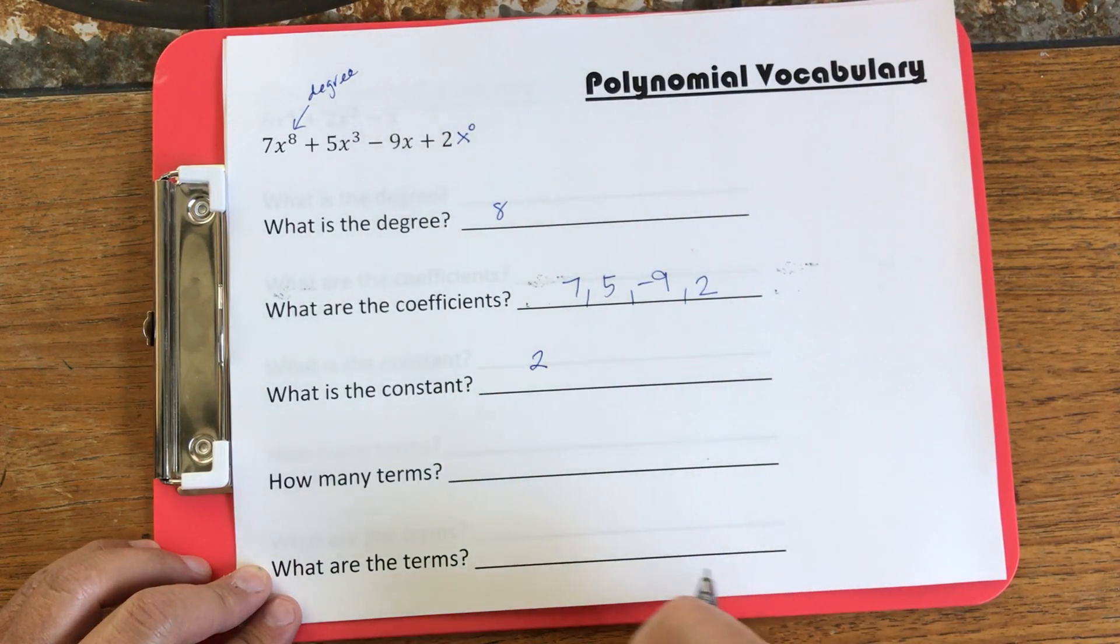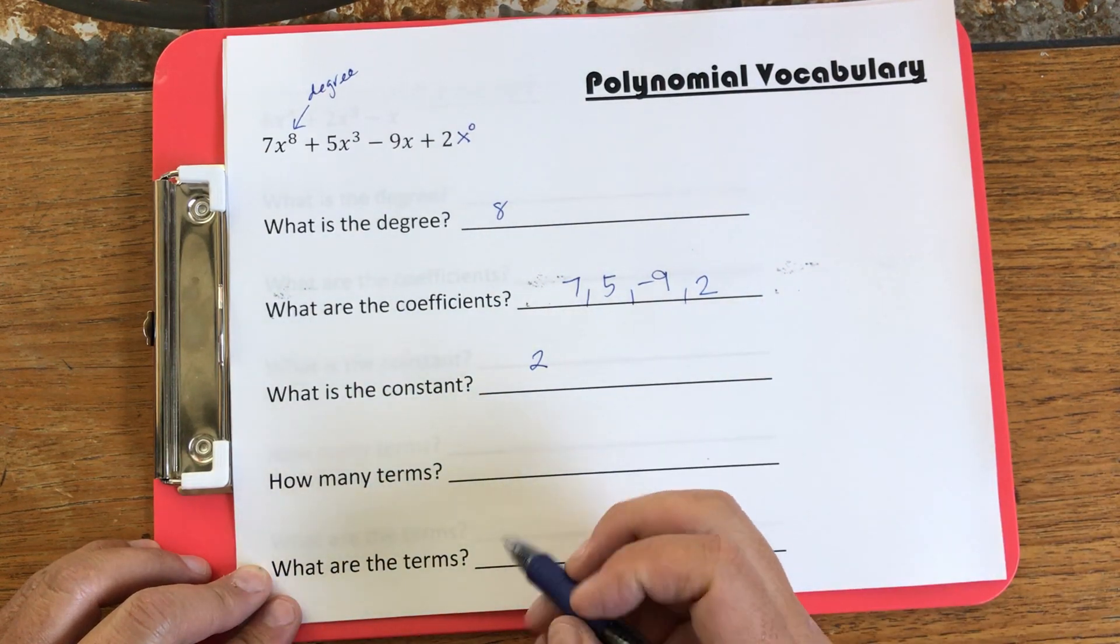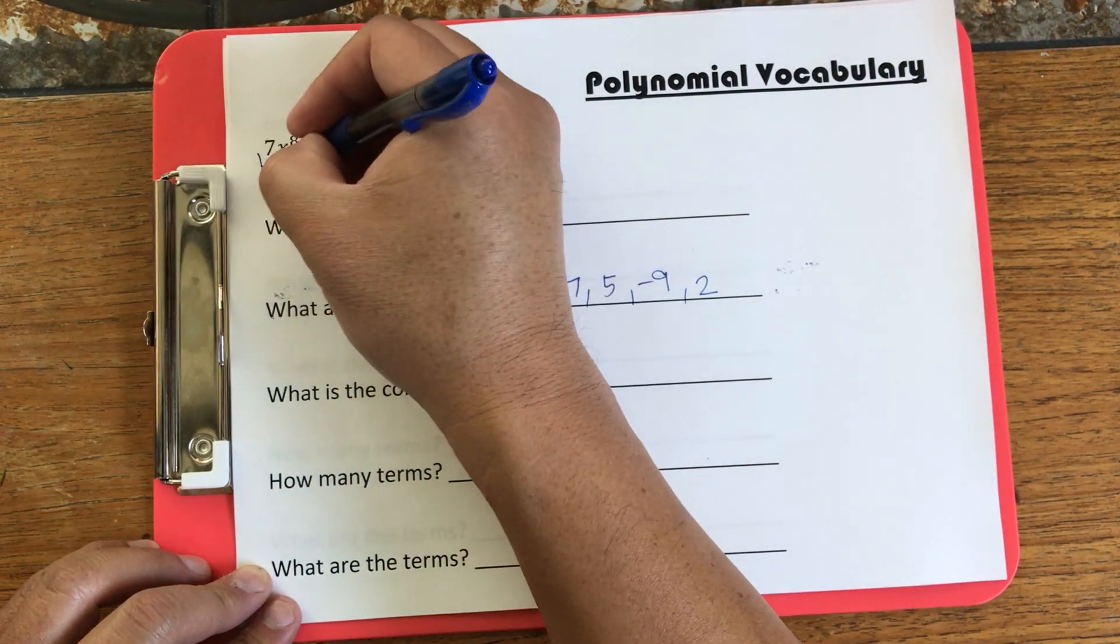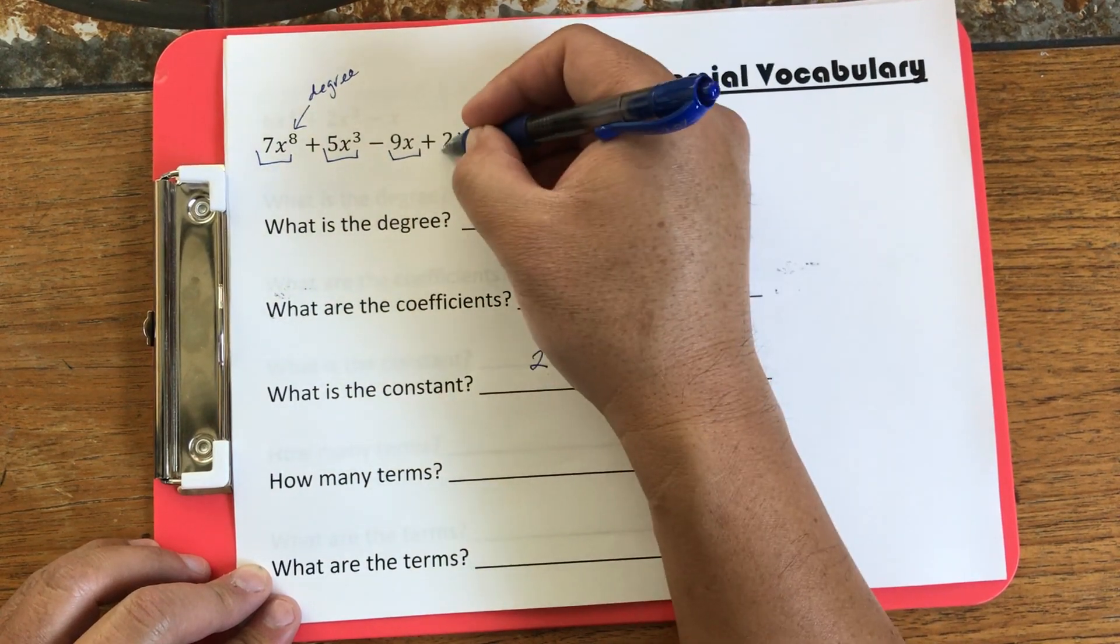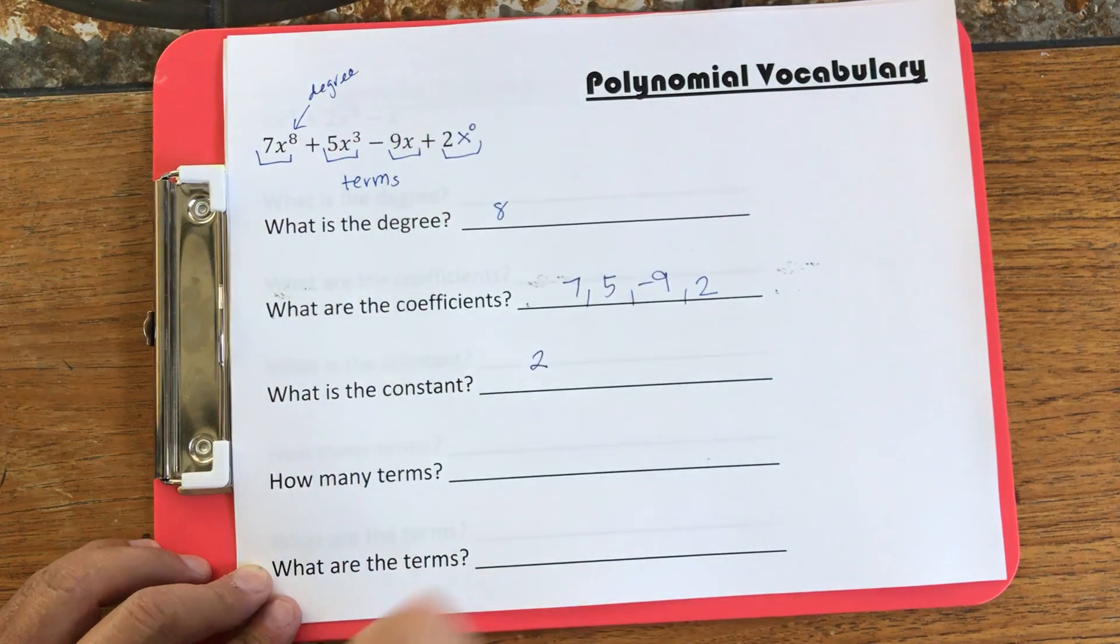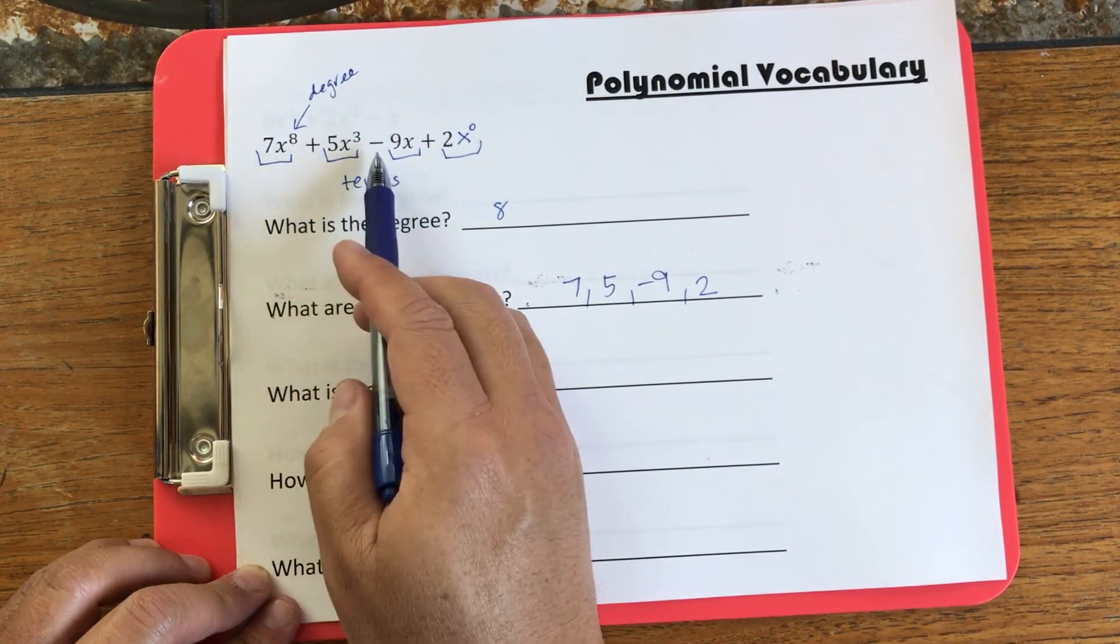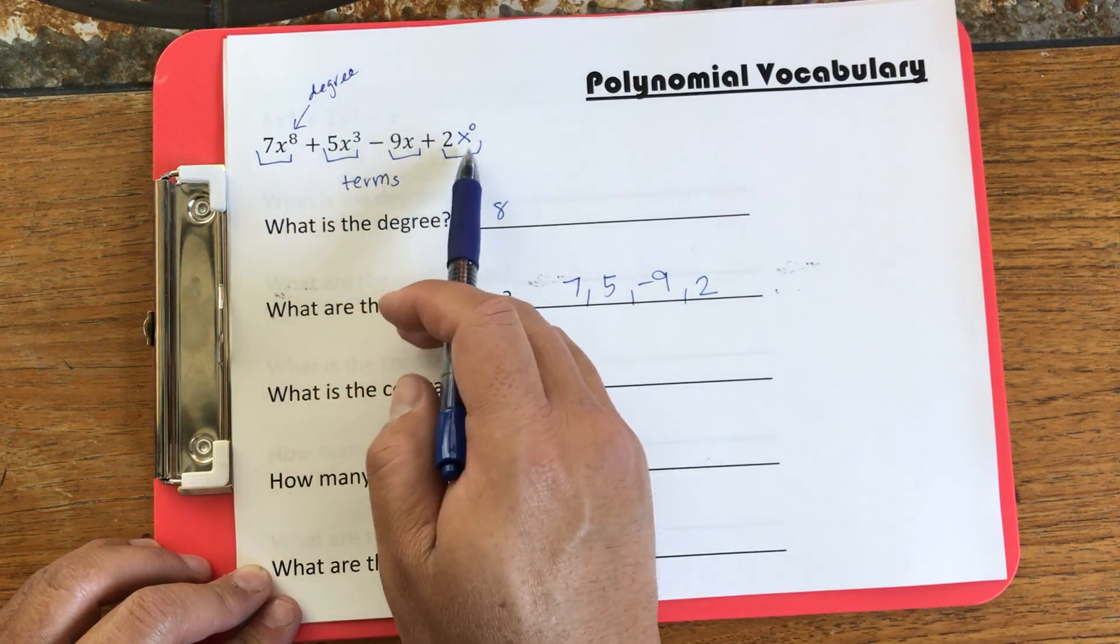Now, terms are separated by plus or minus. So the question is, how many things here are separated by plus or minus? That's a term, that's a term, that's a term, and that's a term. Those are all terms because they're separated by a plus or a minus. So in this case, we have 1, 2, 3, 4 terms.